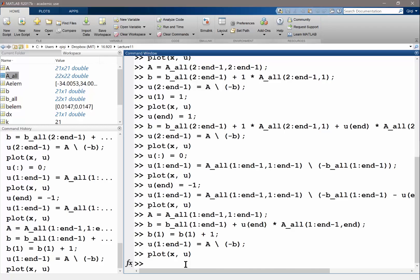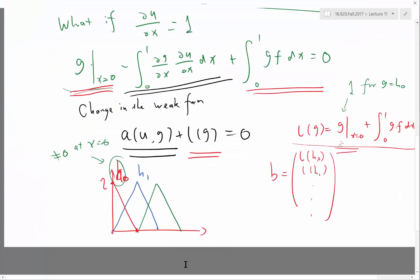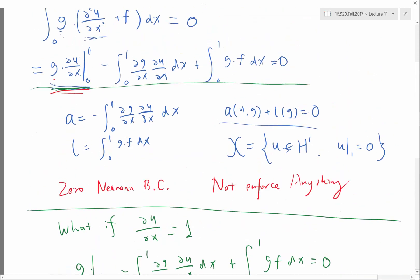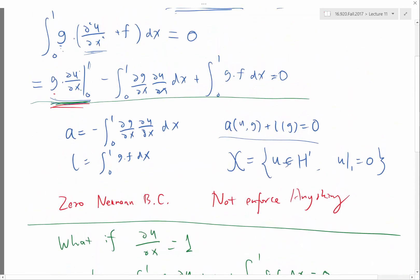as opposed to the zero Neumann boundary condition we actually need to do something on the left: B(1) is equal to B(1) plus 1. Okay, and then let's solve it.